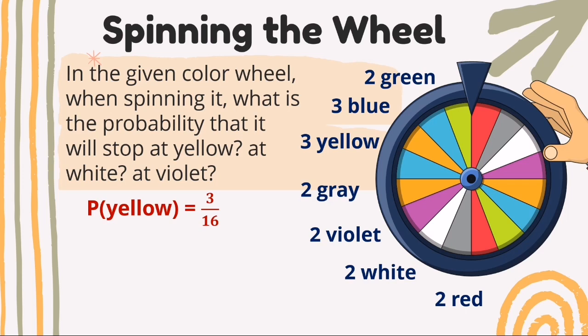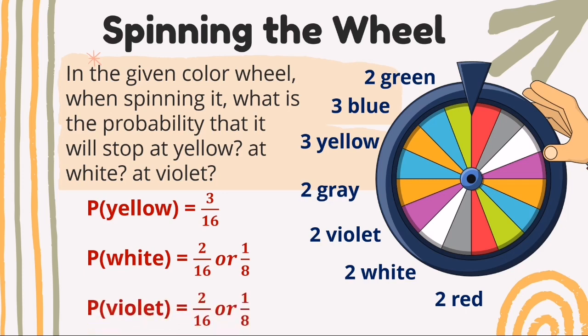There are two white sections on the wheel, therefore the probability that it will stop at white is 2 over 16, which reduces to 1 over 8. There are also two violet sections, so the probability for violet is also 2 over 16, or 1 over 8.